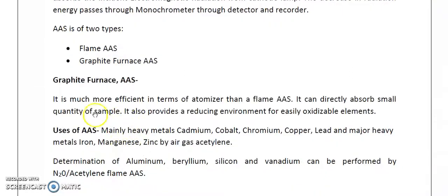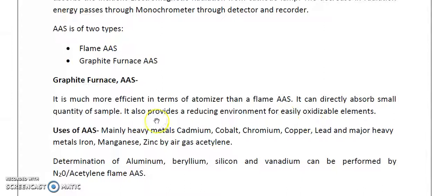Another variety of atomic absorption spectrophotometer is the graphite furnace AAS. It has a much more efficient atomizer than a flame, can directly absorb small quantities of sample, and also produces a reducing environment for easily oxidizable elements. The graphite furnace AAS is mainly used for heavy metals like cadmium, cobalt, chromium, copper, lead, iron, manganese, and zinc.